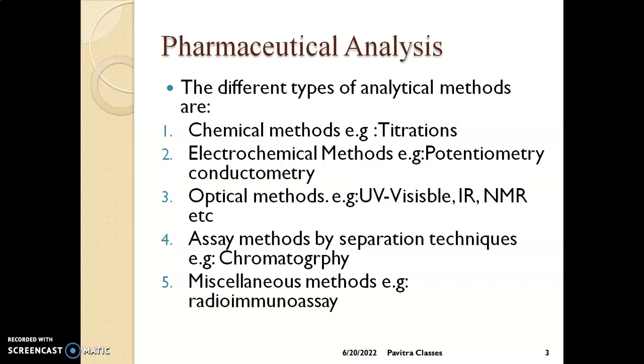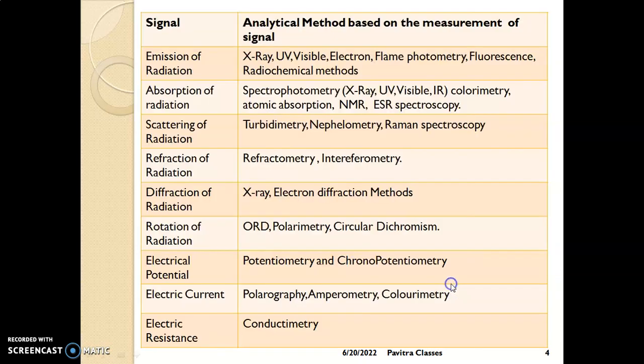The fifth method is miscellaneous methods, which include radioimmunoassay for radioactive metals and immunological assays. There are also other types of analytical methods classified based on the type of signal generated by the instrument.